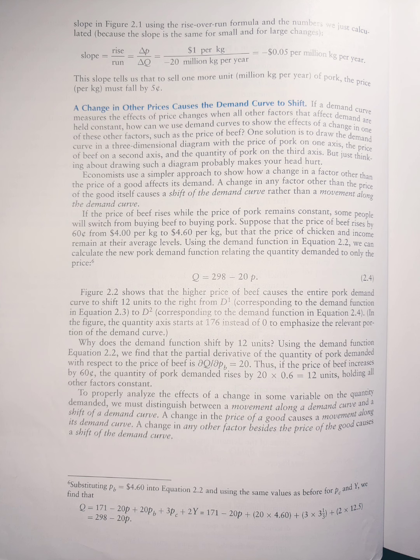At the same price level of $3.30, demand curve 1 has 220 million kilograms of pork per year demanded, and at that same price with demand curve 2, 232 million kilograms of pork per year.